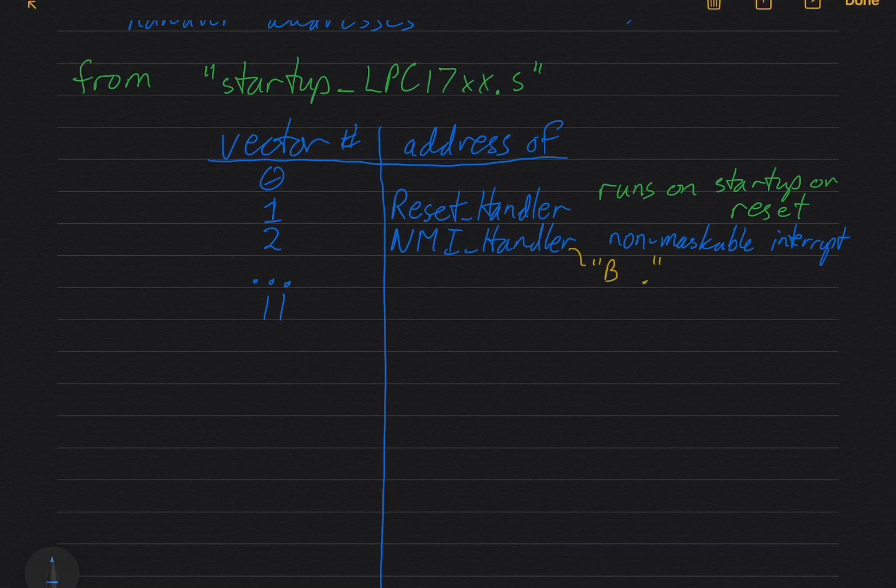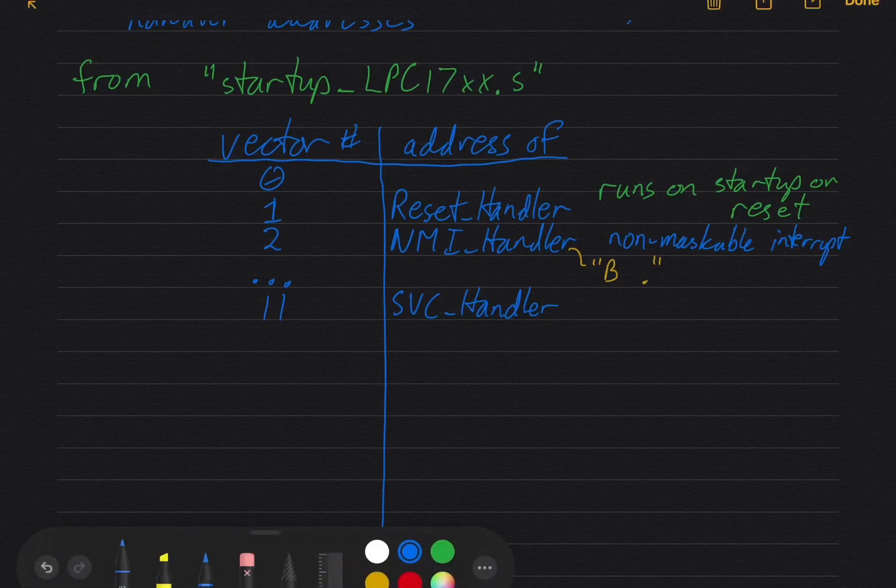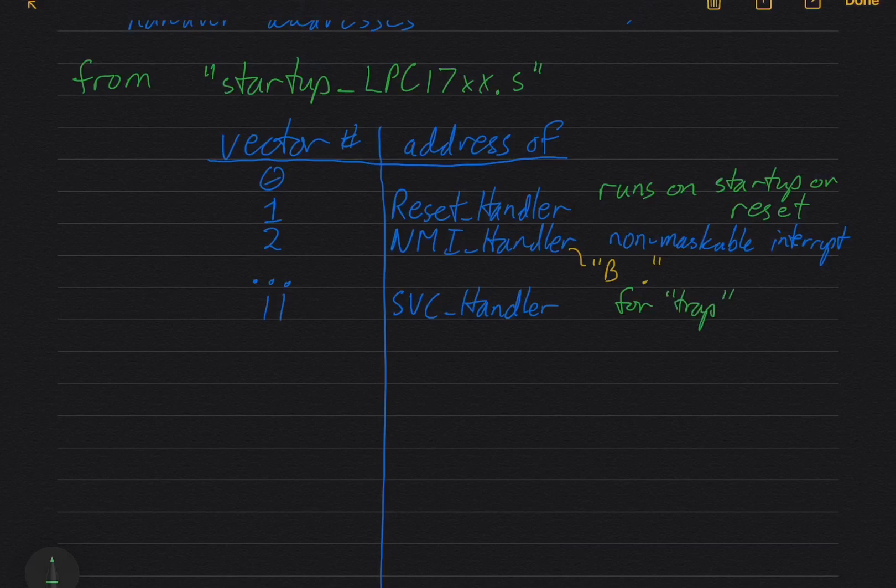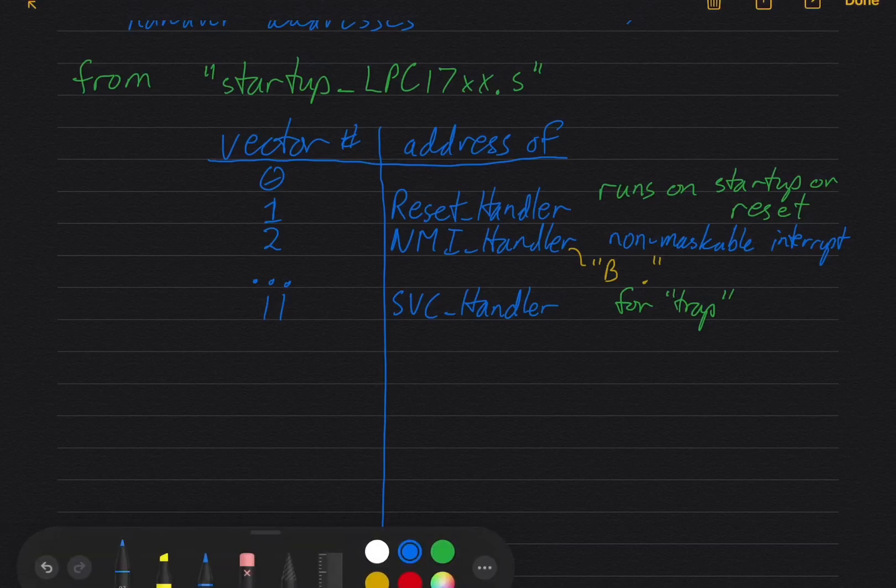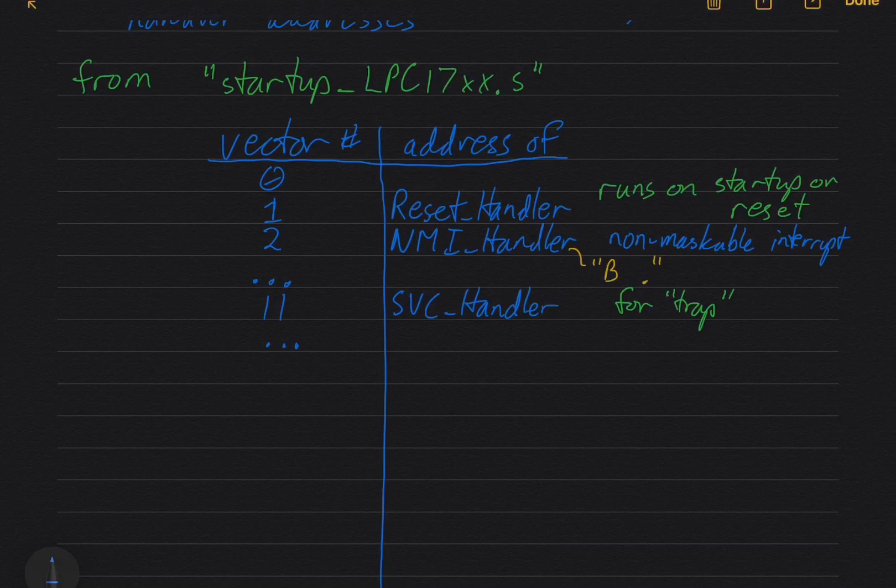I'm just going to show you selections from the vector table. Vector 11 is the service handler, so that's the software method to invoke an OS service. This is for the trap that we talked about before, an OS service call. Vectors 1 to 15 have internal sources. They are either for faults, there's a memory fault, there's a bus fault, or for trap instructions. Those are the internal sources I mentioned before.